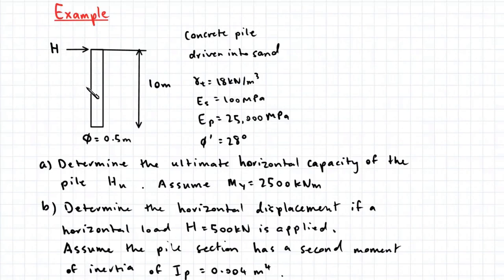Here we have a concrete pile which has been driven into sand with a horizontal load applied to the top. The pile is 10 meters long and has a diameter of 0.5 meters, and the properties of the soil and pile are given here.